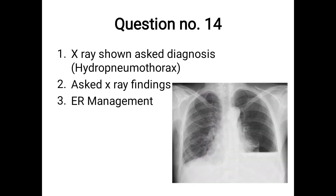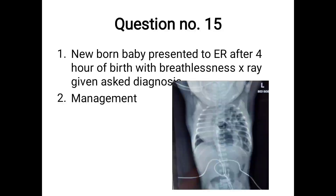Question 14: an X-ray was given showing hydropneumothorax. X-ray findings: air-fluid level on the left side and hyperlucent area on the left side suggesting pneumothorax. ER management: ABCD approach — airway, breathing, circulation, consult chest physician, and plan for intercostal chest drain (ICD) placement.